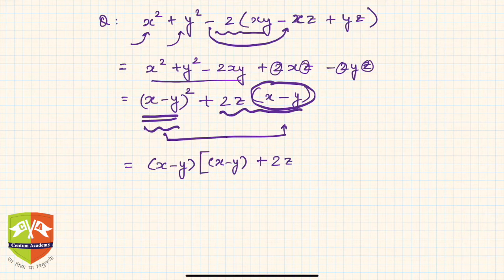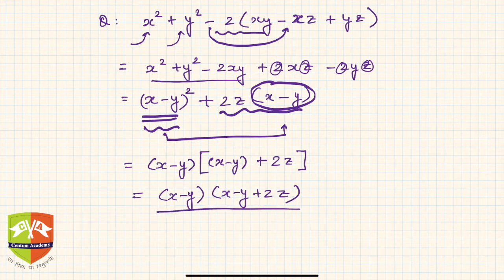Hence now the factors are (x - y)(x - y + 2z). So what are the factors? (x - y)(x - y + 2z). I hope you understood the method.